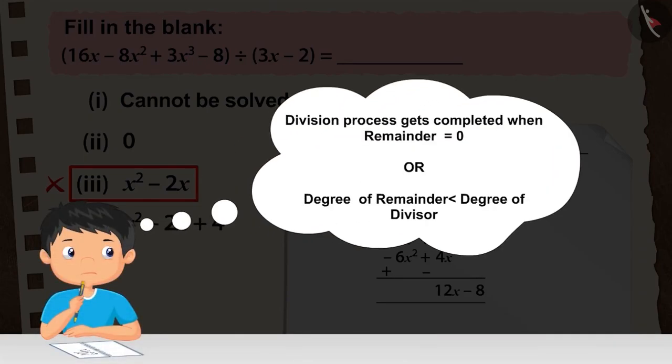Recall that, when the remainder is 0 or the degree of the remainder becomes smaller than the degree of the divisor, then the division process ends.